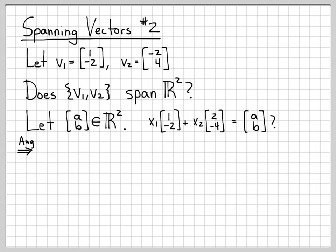I can take this equation and write it as an augmented matrix. Here's the augmented matrix for this system of equations. If we solve this augmented matrix, we can solve for what x1 and x2 are equal to. If we can find x1 and x2 to make this equation true, then we say that the vectors v1 and v2 span R². If we can't find x1 and x2, then the vectors v1 and v2 don't span R².